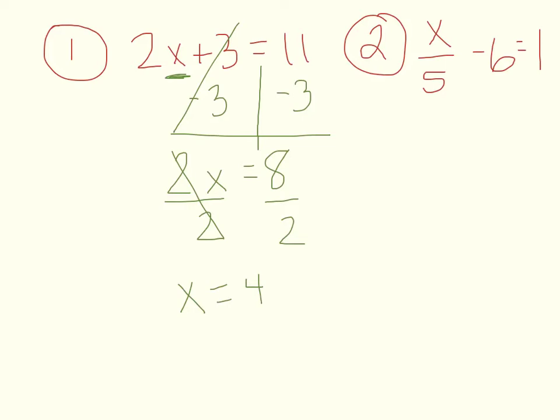Number 2, x over 5 minus 6 equals 1. So again, we've got to get rid of the subtraction first, so we can add 6 to both sides. I do like my line, so that way I don't forget where the equal sign was. So when we do that, we get x over 5 equals 1 plus 6 is 7. Now to undo division, you have to multiply both sides by 5. So you get x equals 35.